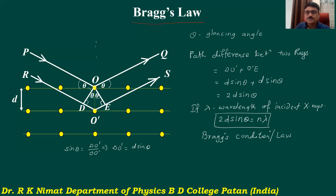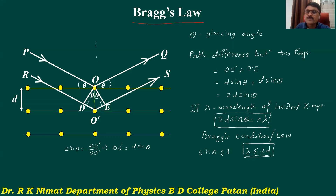One important note: since sinθ is always less than or equal to one, the condition 2D sinθ = nλ requires that λ ≤ 2D. So for diffraction or reflection of X-rays to occur, the wavelength of X-rays must be less than or equal to twice the interplanar spacing. Only then will reflection or diffraction of X-rays be observed.